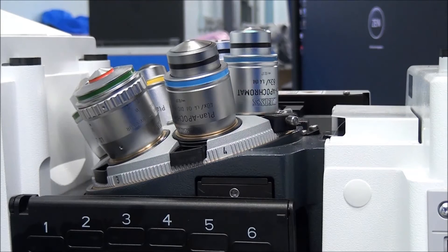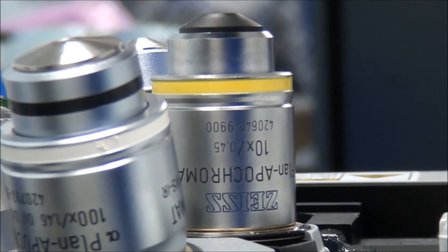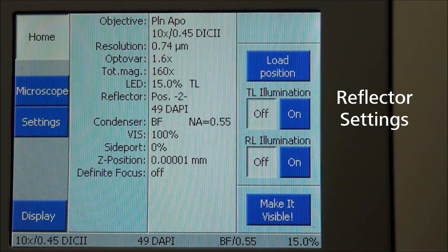Swing in the 10x objective or whichever lens you are using. Proper Kohler can only be set up for magnifications of 10x and greater. Make sure that your reflector turret is set to a bright field position, or a DIC position if no empty positions are available. Use the manual roll wheel or touch screen to do this.